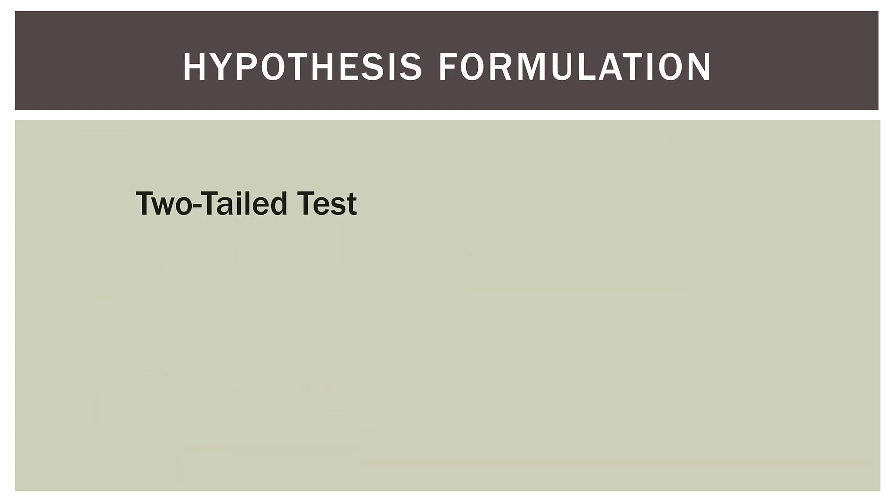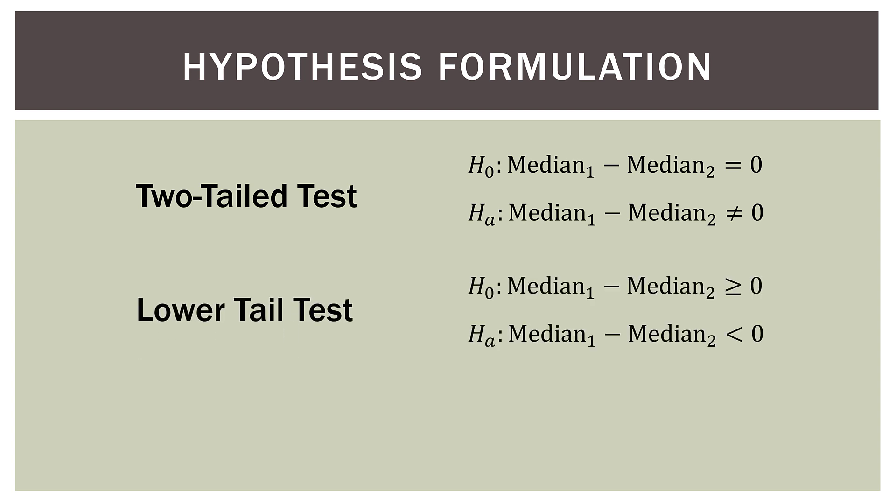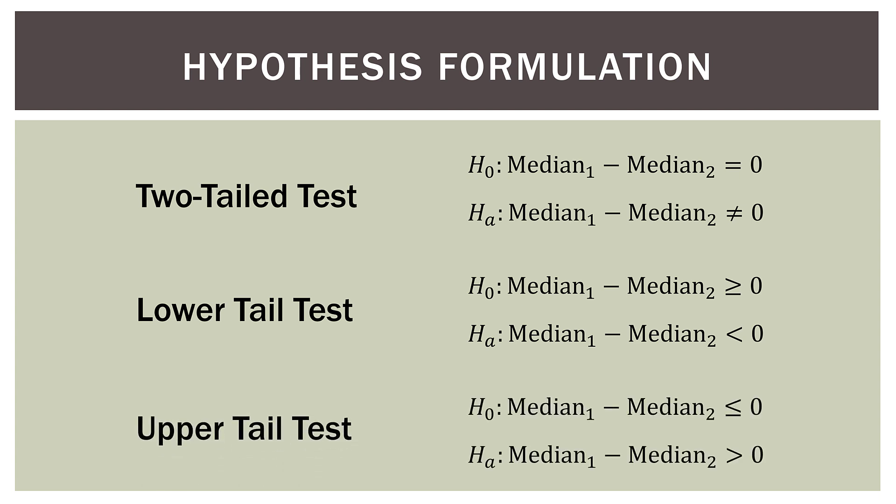We can have different hypotheses in this situation. For a two-tailed test, we hypothesize that the difference between the medians is zero. For a lower-tailed test, the null is that the difference is greater than or equal to zero, and the alternative is less than zero — remember, the alternative hypothesis points in the direction of the test, so the less-than sign points left indicating a lower-tailed test. An upper-tailed test is the exact opposite, with the alternative being greater than zero. The Wilcoxon rank sum and Mann-Whitney test can handle any of these situations.